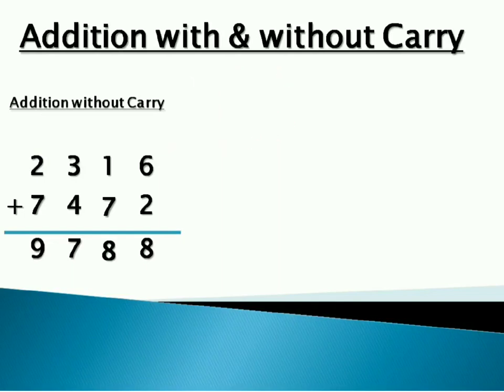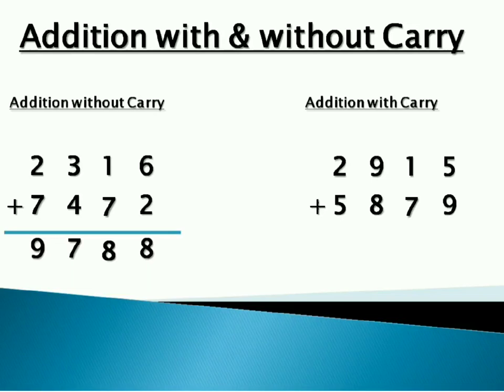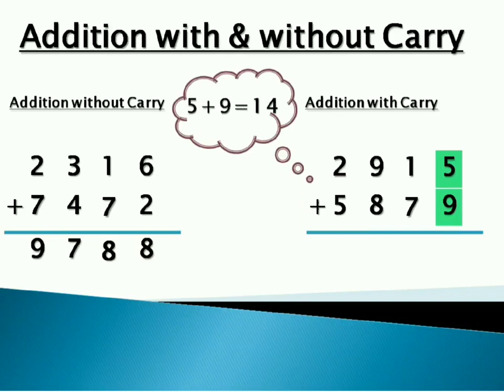Let's solve one more example with carry. 2915 plus 5879. Let's start with the units place. 5 plus 9, that is 14. So we will write 4 here and 1 here.